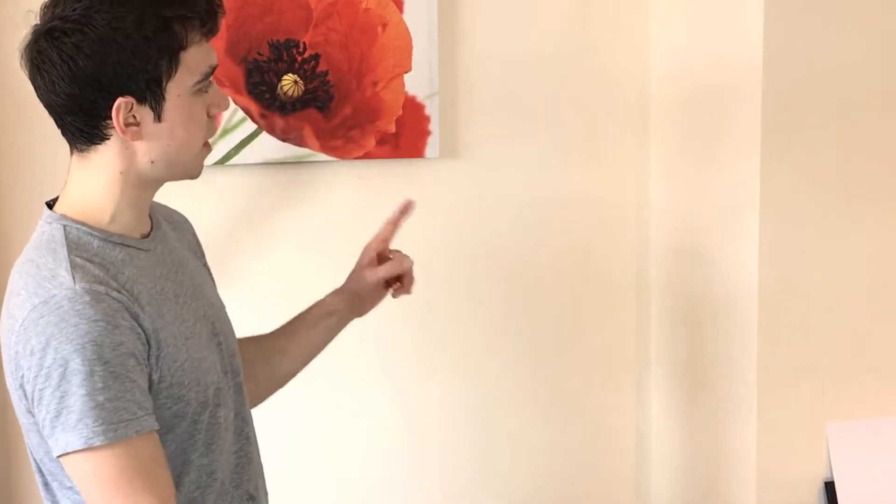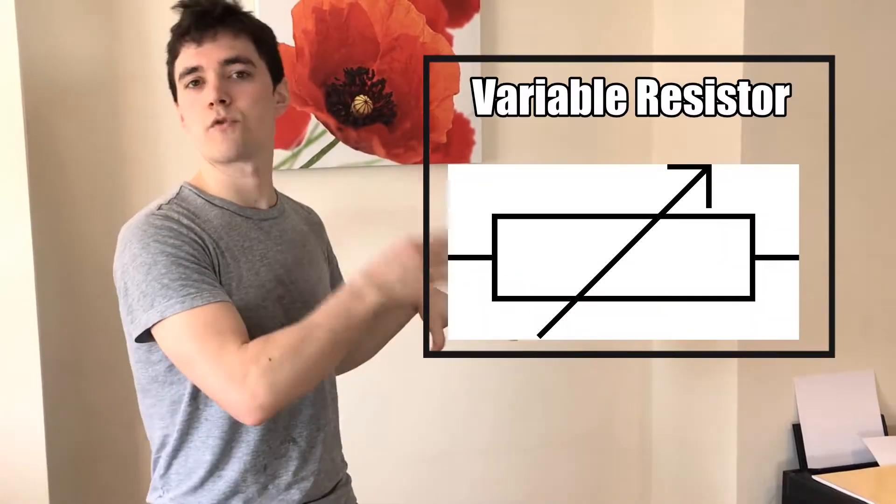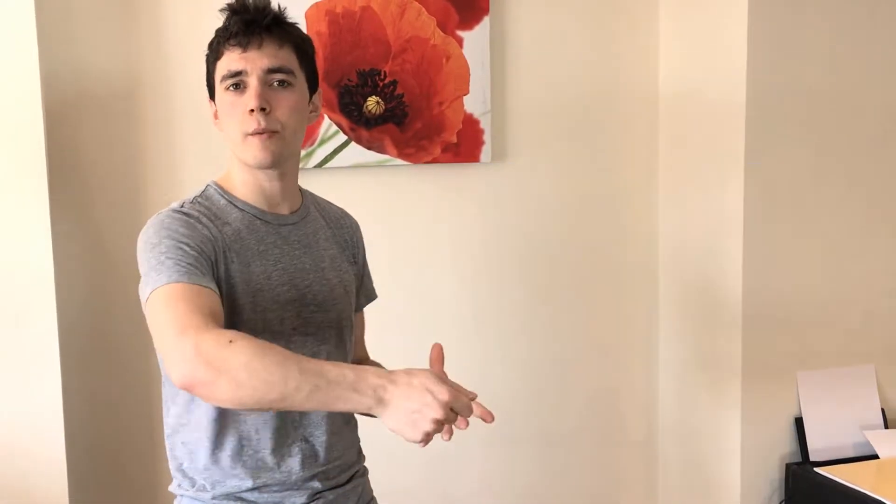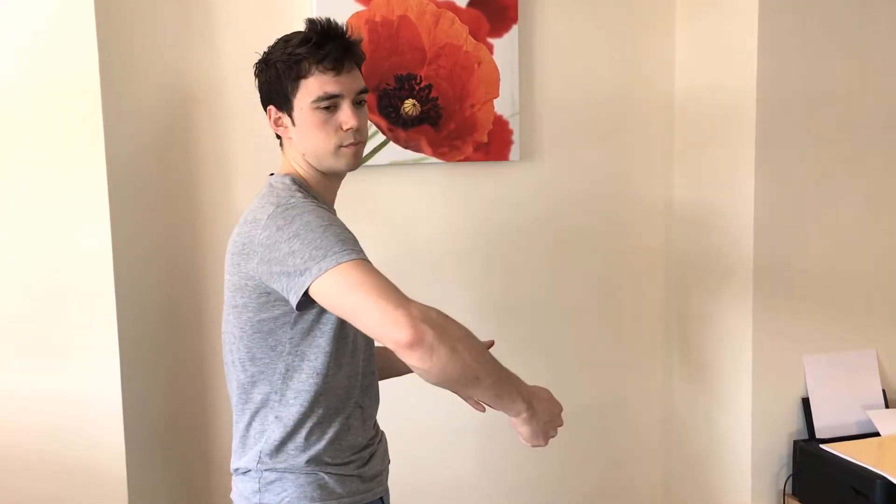You can also have a variable resistor, which has its own circuit symbol. A variable resistor is something which we can change the resistance of as we wish. For example, if we want 12 ohms, we put it up — creating more resistance wire for the current to go through. More resistance wire in the variable resistor means more resistance overall in that particular component.